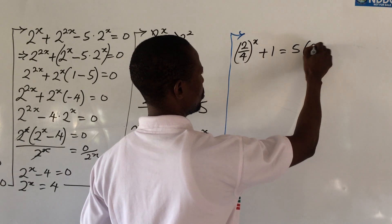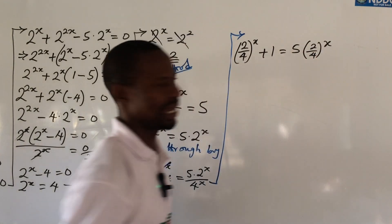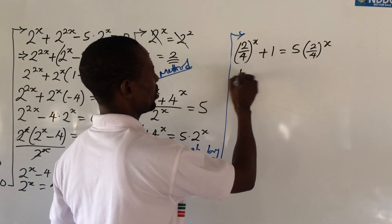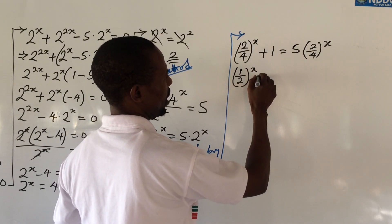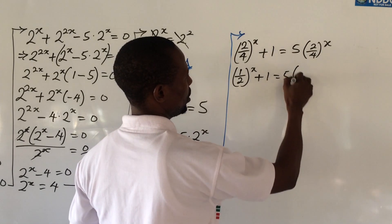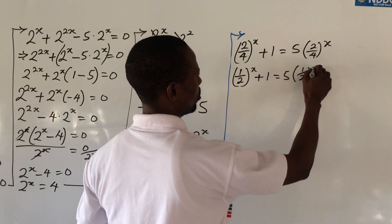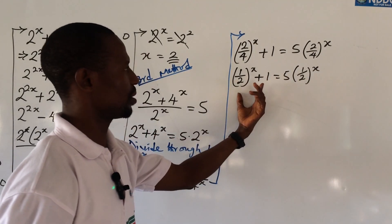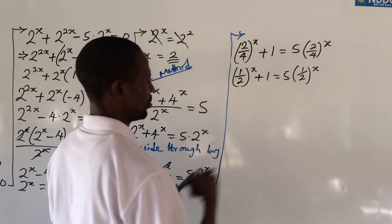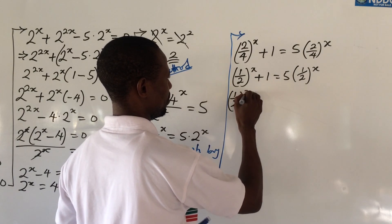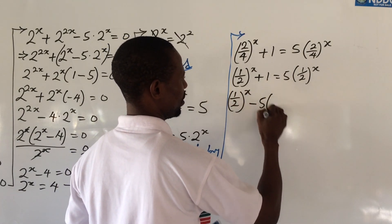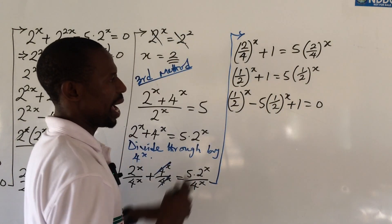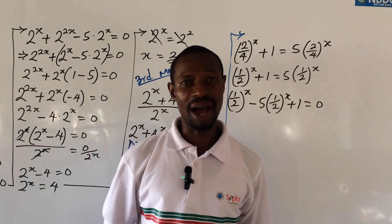Simplifying 2/4 to 1/2, we get (1/2)^x + 1 = 5 · (1/2)^x. Bringing everything to the left-hand side: (1/2)^x − 5 · (1/2)^x + 1 = 0.